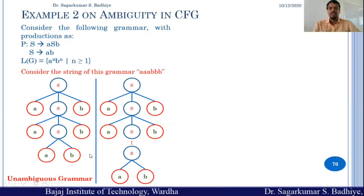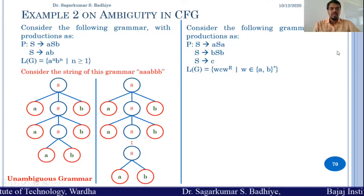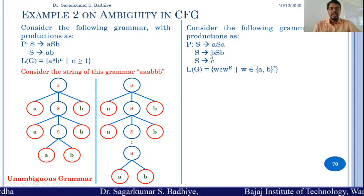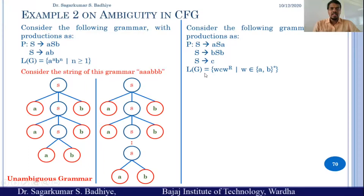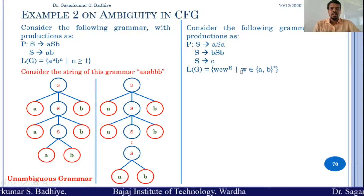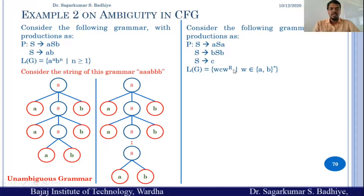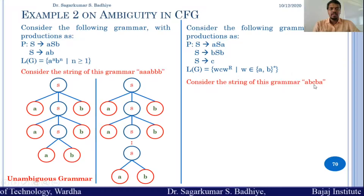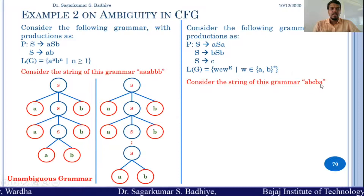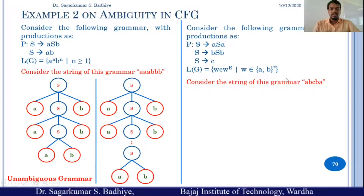Consider another example with the production rules: s → asa, s → bsb, and s → c, which generates the language L(G) = {wcwʳ | w ∈ {a,b}*}, where wʳ is the reverse of w. Consider the string abcba: here w = ab, wʳ = ba, and c is the separator.